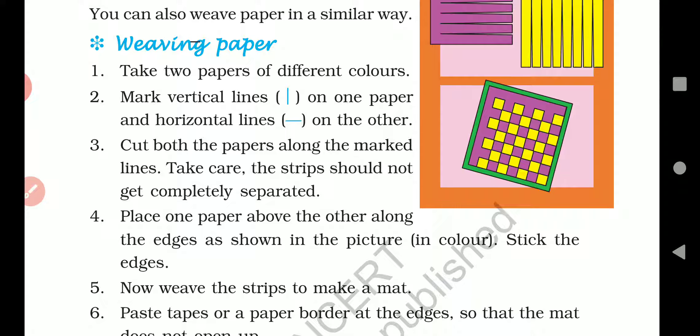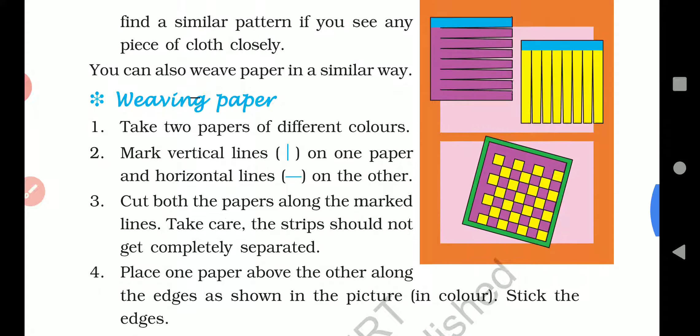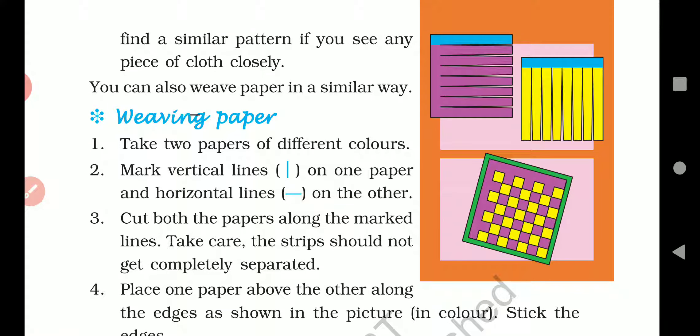So vertical lines means straight lines on one paper, and on the other paper make horizontal lines. Cut both the papers along the marked lines. Now you have to cut along the thin lines you made. Take care, the strips should not get completely separated. Now when you cut with scissors, you will need an elder's help.